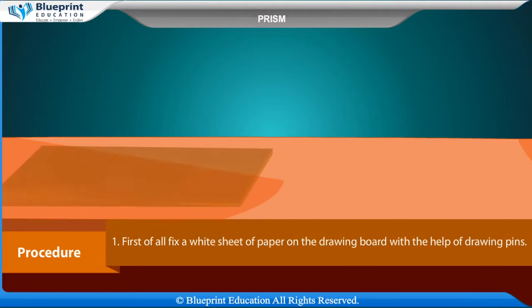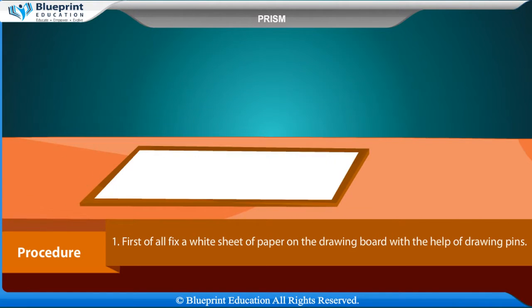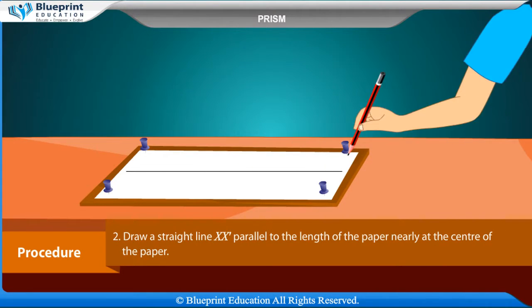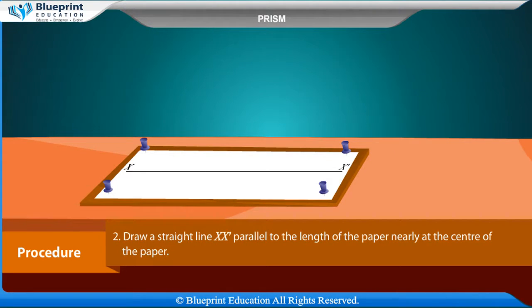Procedure: First of all, fix a white sheet of paper on the drawing board with the help of drawing pins. Draw a straight line x, x dash, parallel to the length of the paper, nearly at the center of the paper.